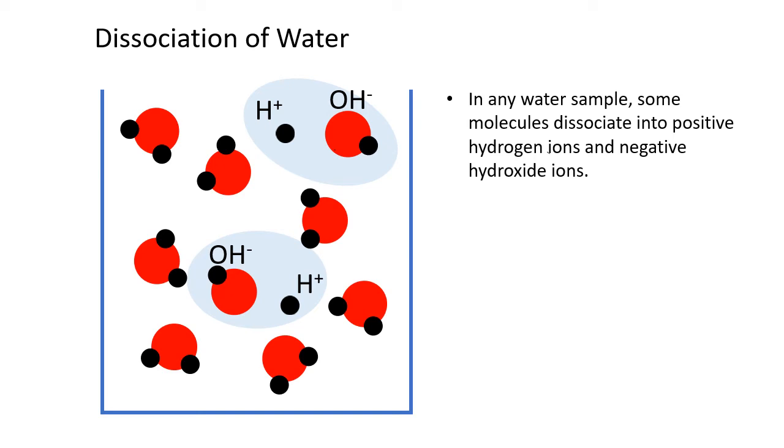Now this is a dynamic process. As these particles move around, those particles may end up joining back together again. But at the same time, other water molecules might split. So in any sample of water at any given moment, a very small percentage of those molecules will have separated into positive hydrogen ions and negative hydroxide ions. That's just how it is.